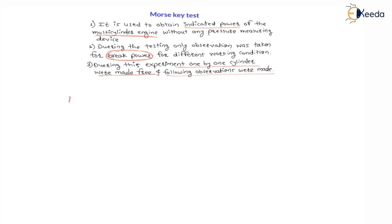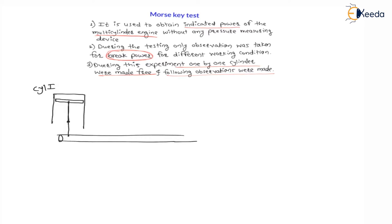For a multi-cylinder engine, let us assume there are four cylinders. This is the first cylinder with its piston — cylinder number one. This cylinder is connected to the crankshaft via a connecting rod and a crank. The crank is connected to the engine shaft. The piston is reciprocating inside cylinder one, the connecting rod is oscillating, and the crank is rotating. Let us say this cylinder one produces an indicated power of I1 — I1 is the indicated power of the first cylinder.